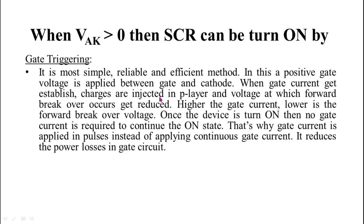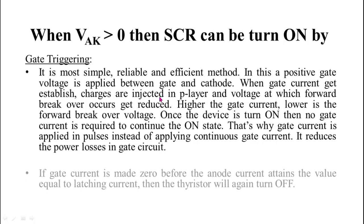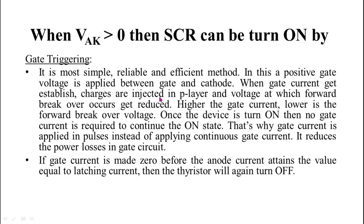Once the SCR get turn on, then no gate current is required to continue the ON state. That's why gate current is applied in pulses instead of applying continuous gate current. It reduces the power losses in gate circuit.